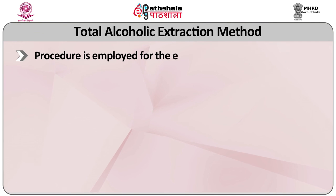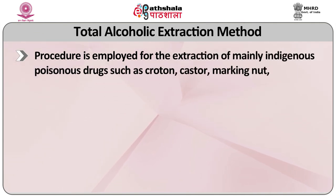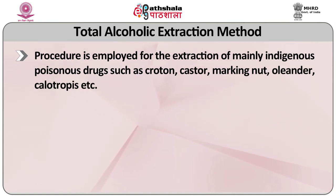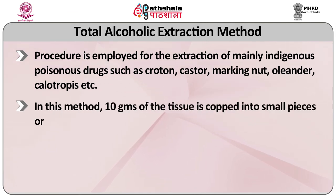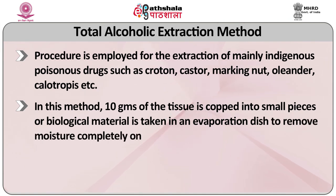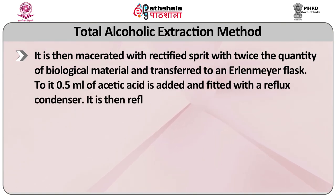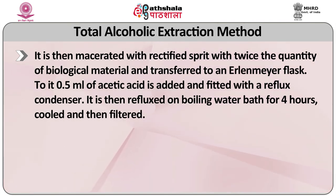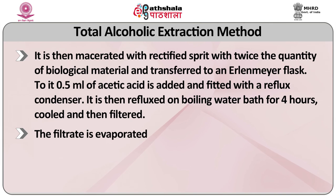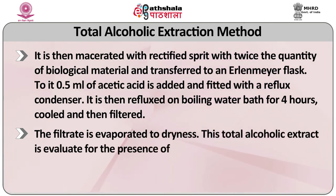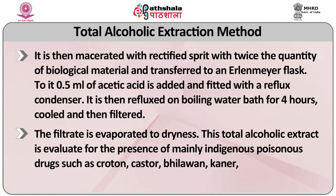The total alcoholic extraction procedure is employed for the extraction of mainly indigenous poisonous drugs such as croton, castor, marking nut, oleander, calotropis, etc. In this method, 10 grams of tissue chopped into small pieces or biological material is taken in an evaporation dish to remove moisture completely on a hot water bath. It is then macerated with rectified spirit at twice the quantity of biological material and transferred to an Erlenmeyer flask. 2.85 ml of acetic acid is added and fitted with a reflux condenser. It is then refluxed on a boiling water bath for 4 hours, cooled and filtered. The filtrate is evaporated to dryness. This total alcoholic extract is evaluated for the presence of indigenous poisonous drugs such as croton, castor, bilwan, kaner, madar, mushrooms, etc.